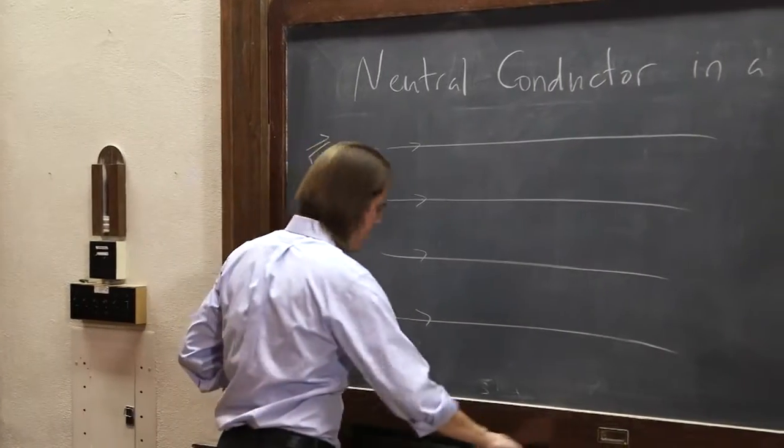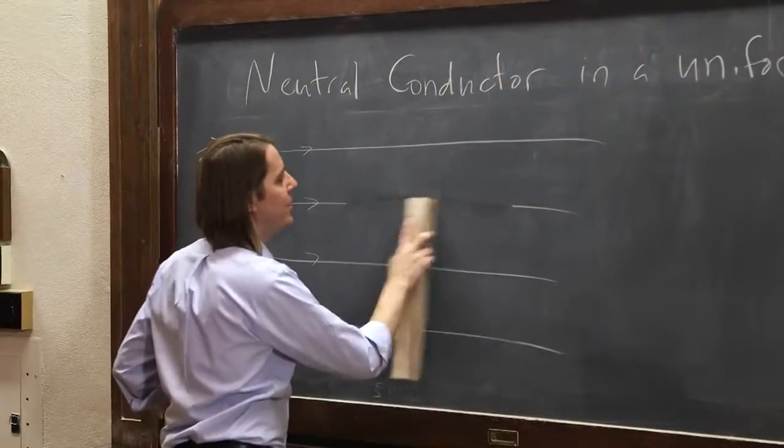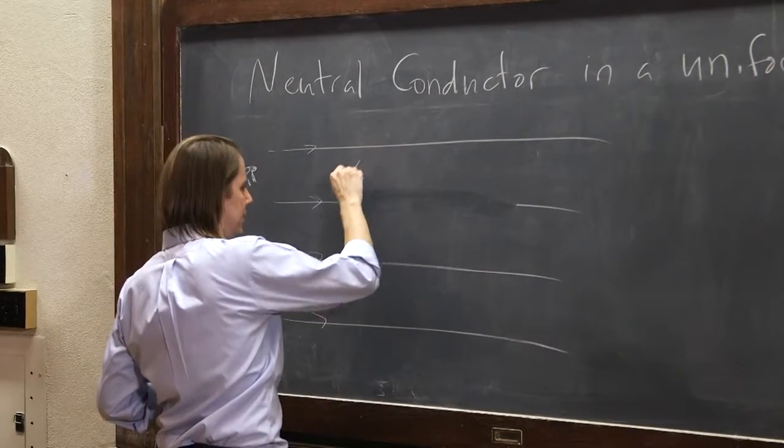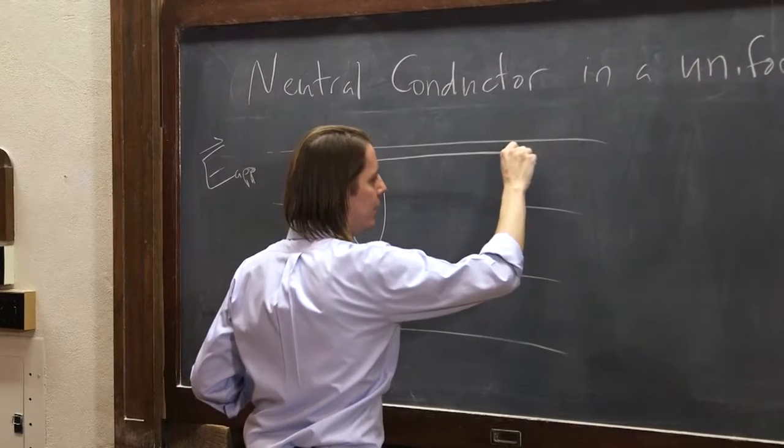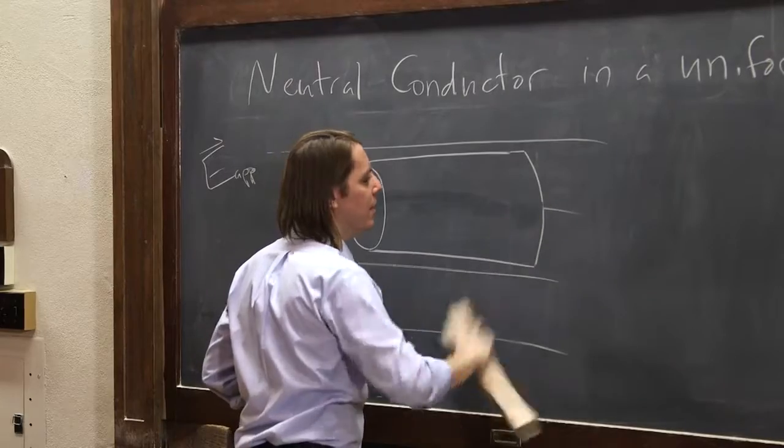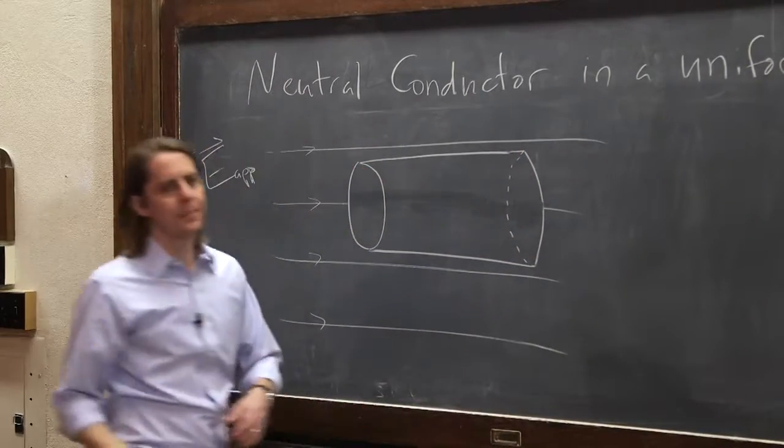And let's drop in a uniform—I'm sorry, let's drop in a neutral conductor. Let's see, draw it kind of like that. A nice little cylinder that looks kind of like that.